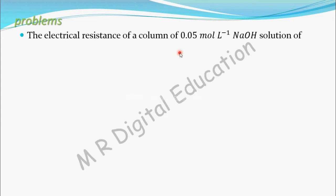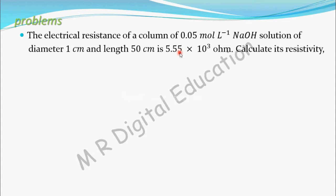The electrical resistance of a column of 0.05 mol per liter NaOH solution of diameter 1 cm and length 50 cm is 5.55 into 10 to the power 3 ohm. Calculate its resistivity, conductivity and molar conductivity.